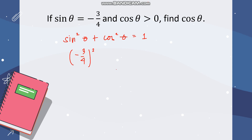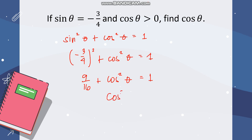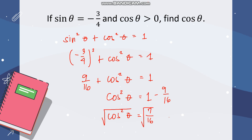Substituting, we have negative three-fourths squared plus cosine squared theta equals one, which gives nine over sixteen plus cosine squared theta equals one. Moving nine over sixteen to the other side: cosine squared theta equals one minus nine over sixteen, which simplifies to seven over sixteen. Taking the square root of both sides gives cosine theta equals square root of seven over four. Since cosine theta is greater than zero, we take the positive square root, so the answer is square root of seven over four.